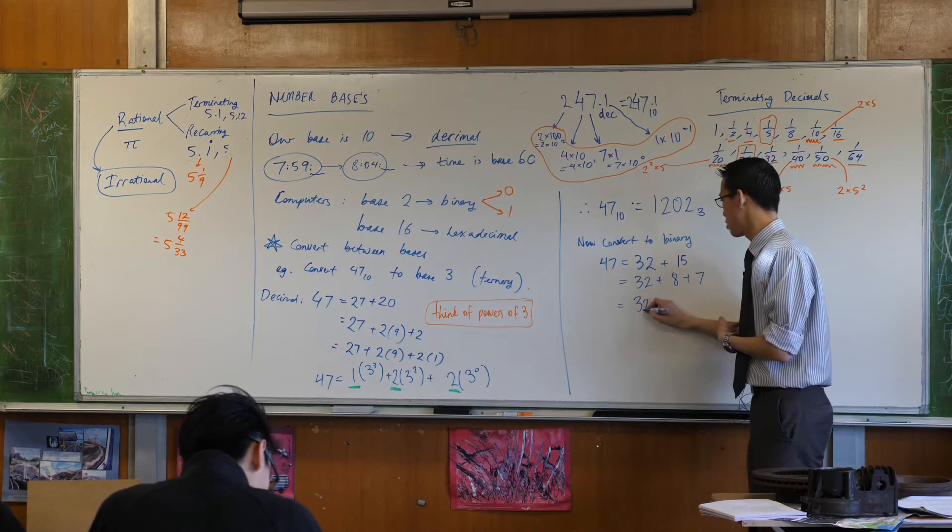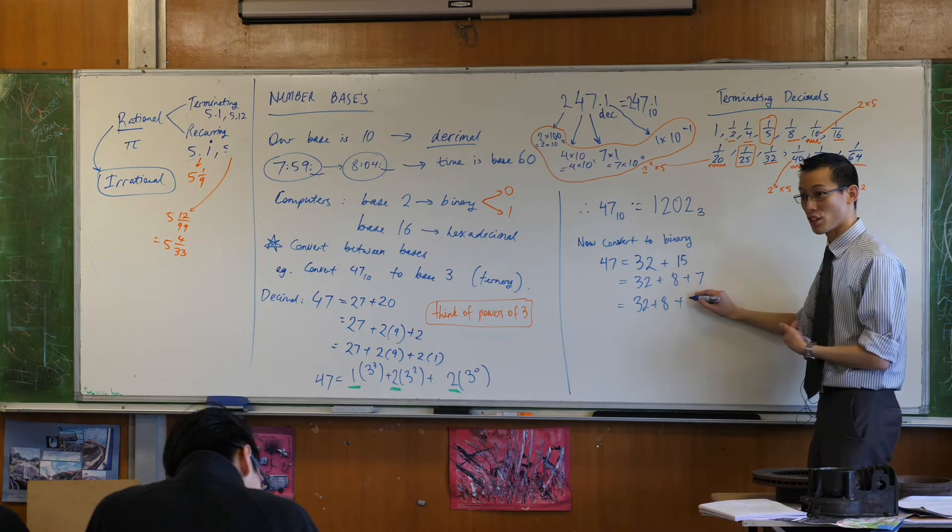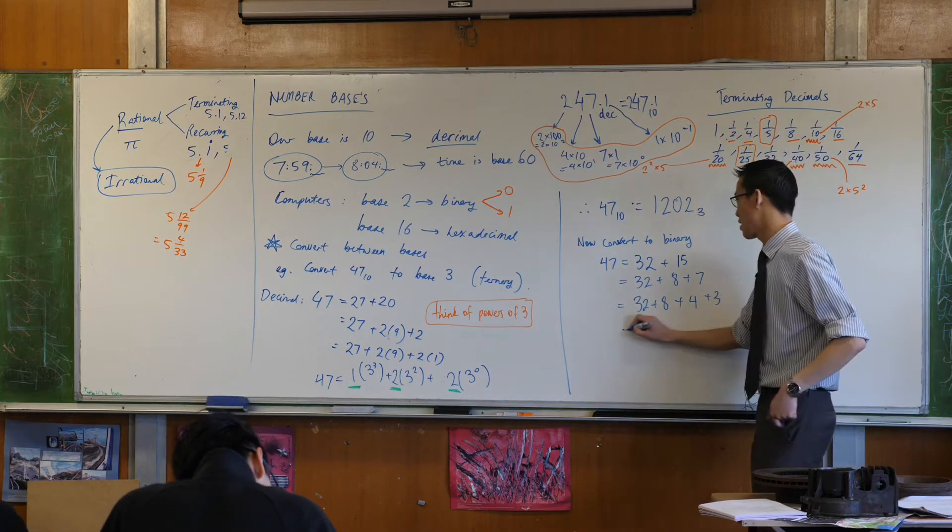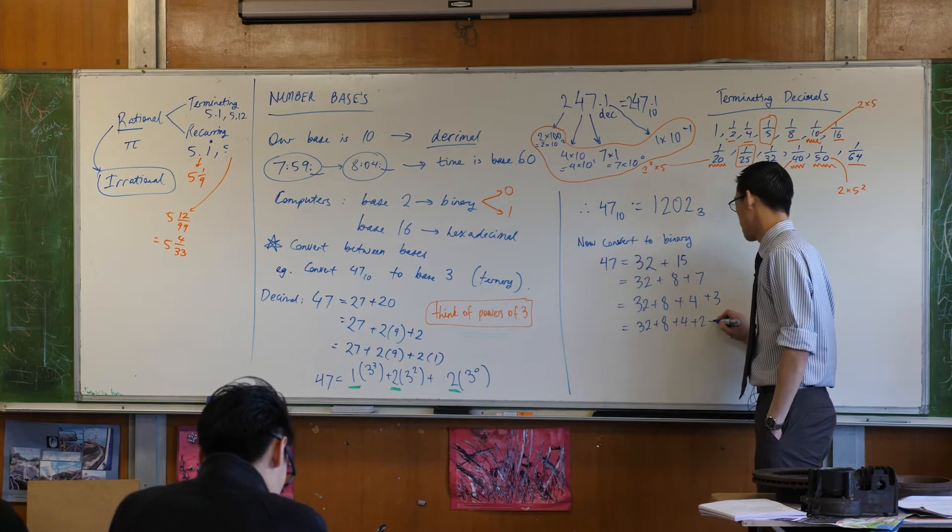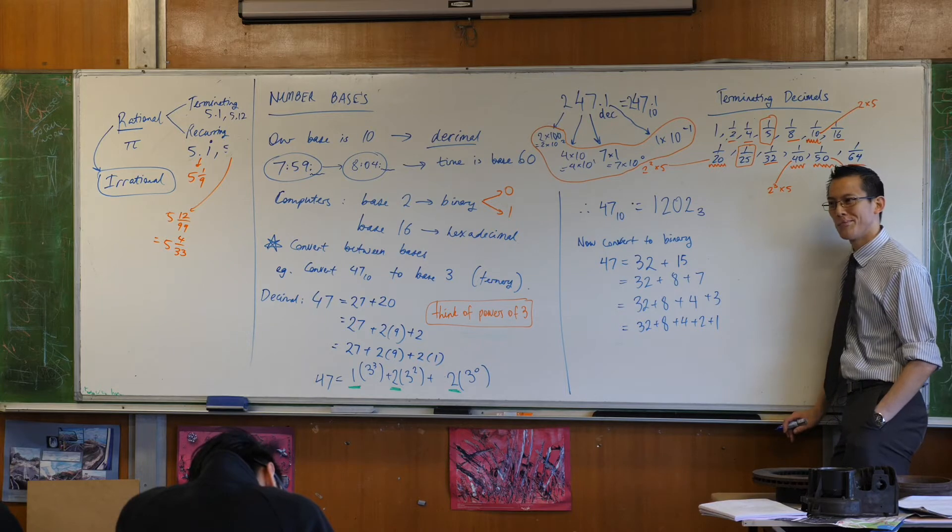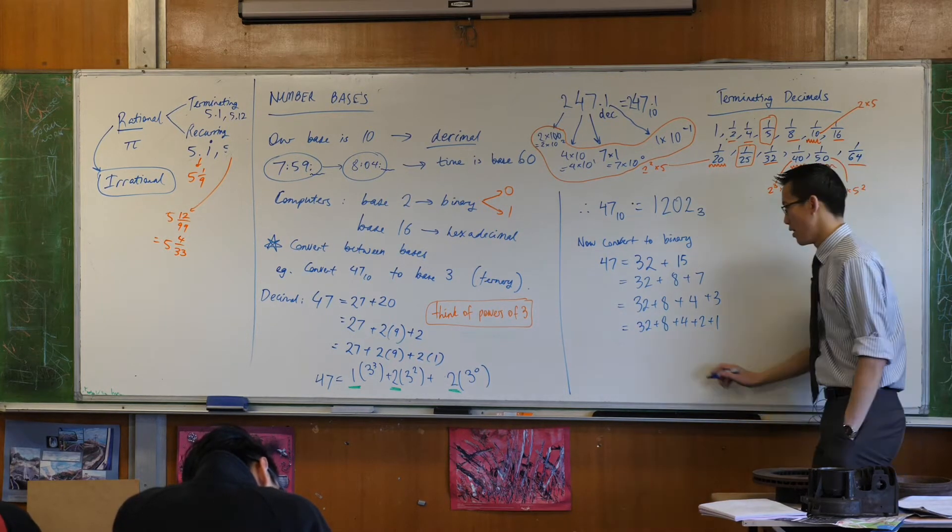7. 32 plus 8 plus, what's the next one? It's going to be 4, right? Plus 3, and then I'm pretty much there. Have I written everything in powers of 2? I have, right? I'm there.